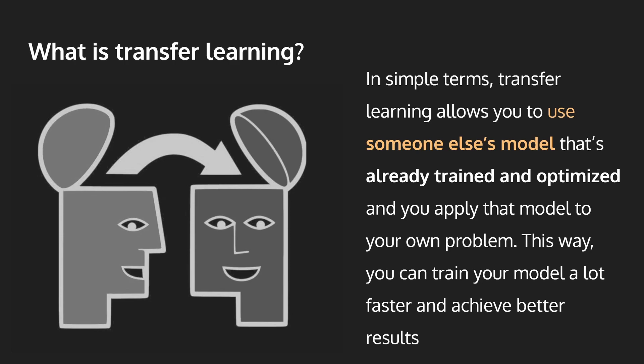This way you can train your model a lot faster and achieve better results. Normally, how we would approach a problem is that we build our own neural network from scratch. But what if we can use someone else's model that's already performing well on a related topic and use that to fit our own problem? Transfer learning simplifies a lot of our problems by reducing training time and achieving higher accuracy. You can download an open source model that someone else has already trained, tuned, and optimized, and use that as a starting point to train your model on a smaller dataset for a given task. In other words, transfer learning is the transfer of knowledge from a pre-trained network in one domain to your own problem in a different domain.